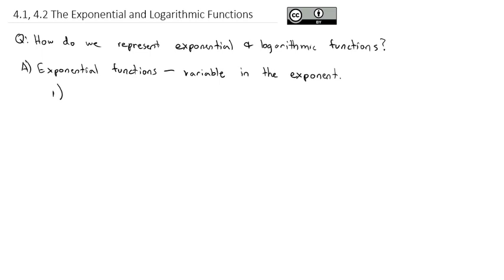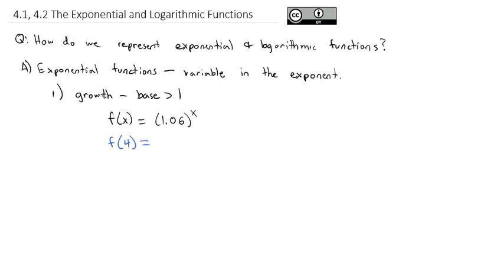There are two main types of exponential functions. The first is exponential growth, which is when the base is greater than 1. For example, f(x) = 1.06^x — because that base of 1.06 is greater than 1, this is called exponential growth. As we put in bigger and bigger numbers, the function also gets bigger. So f(4) = 1.06^4, which is about 1.26 on the calculator.